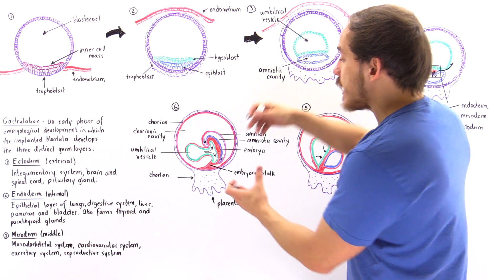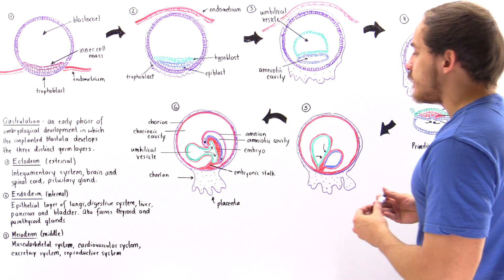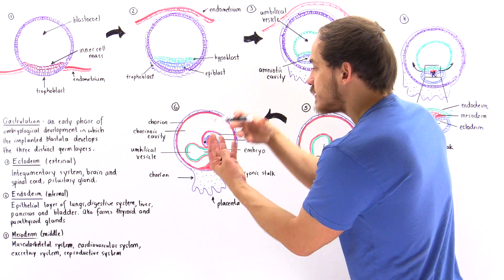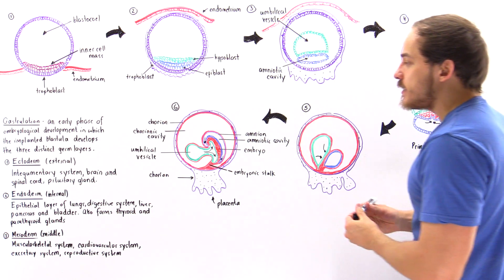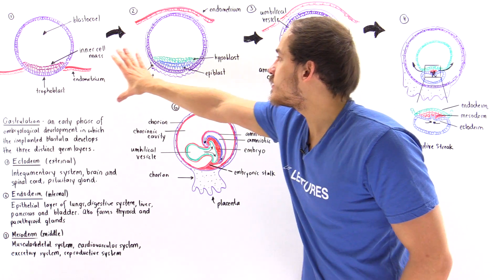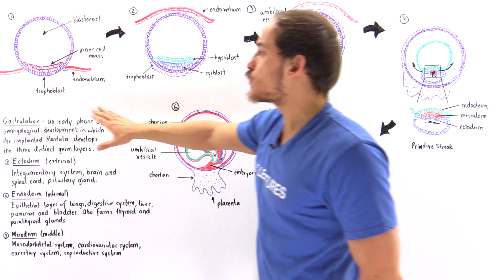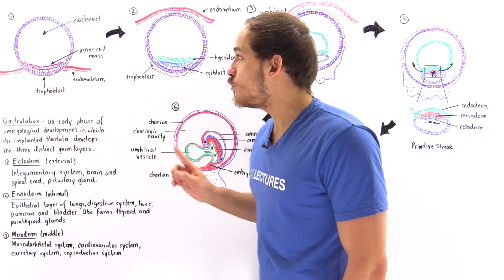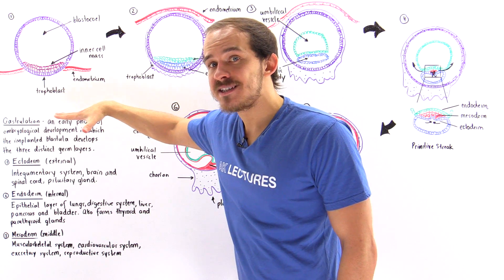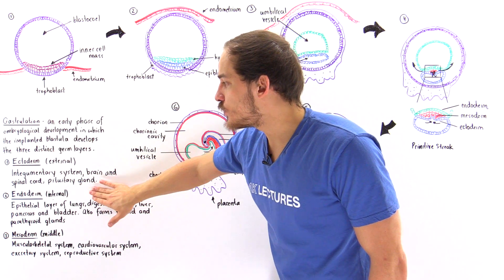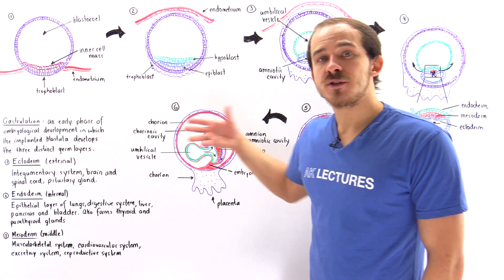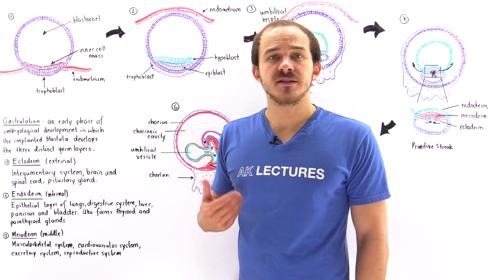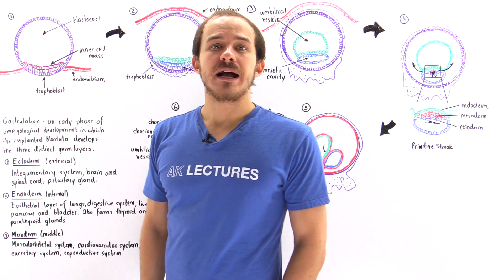The amniotic cavity houses that growing fetus. This is the process we call gastrulation — an early phase of embryological development in which, following implantation, the three germ layers — the ectoderm, the endoderm, and the mesoderm — begin to form and ultimately give rise to the different structures, organs, and systems found inside the human body.